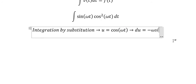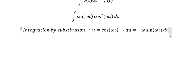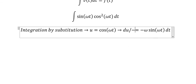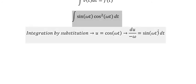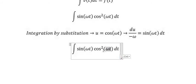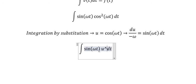Since we don't have the negative ω, we divide both sides by negative ω. We change to u², and sin(ωt) dt becomes du/(−ω).